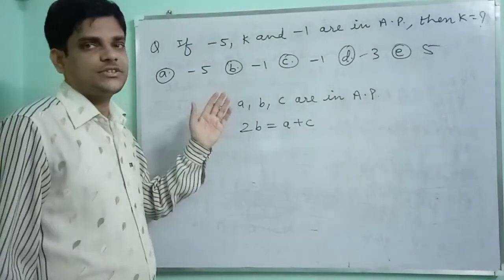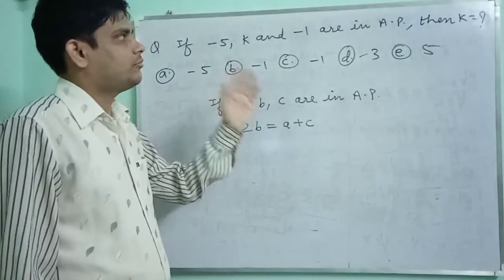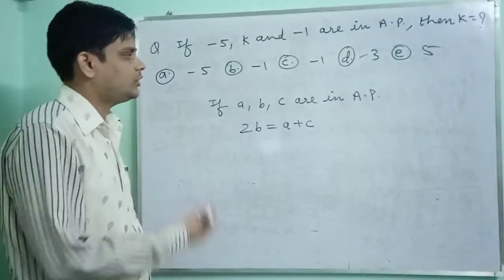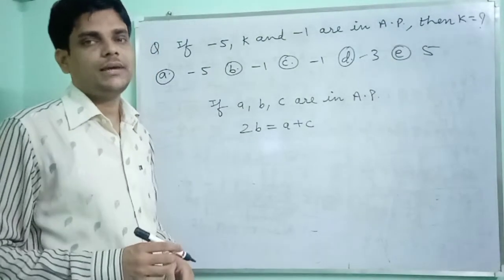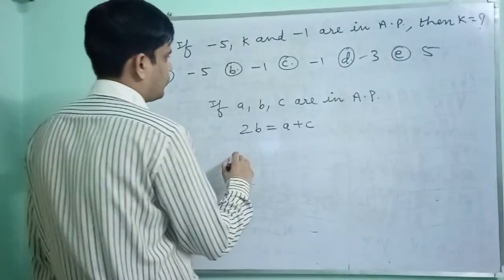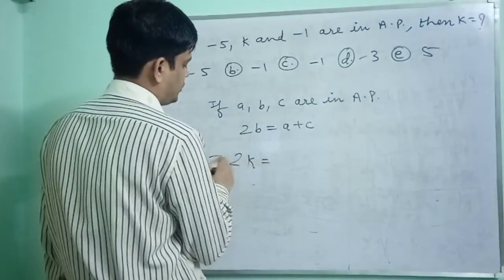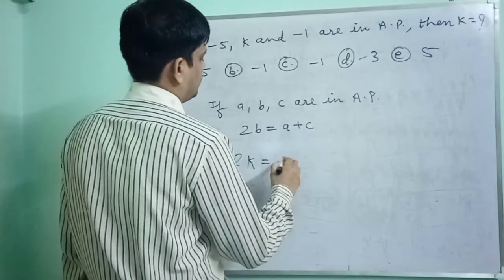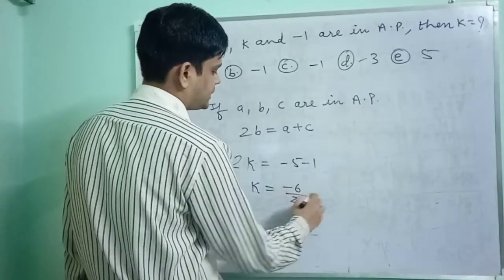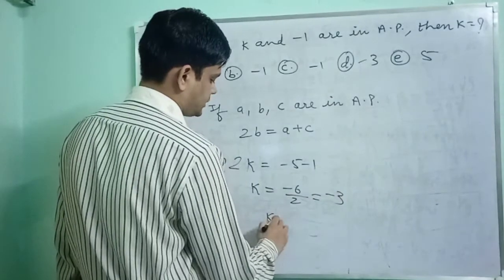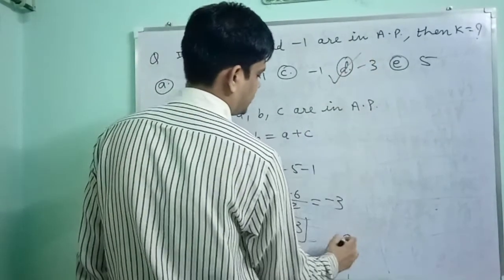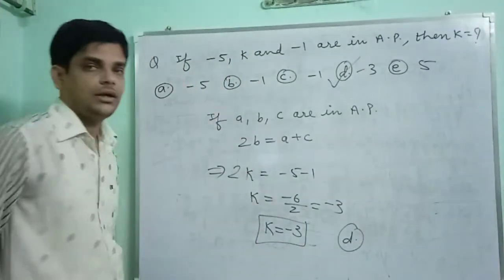If minus 5, K and minus 1 are in AP, then what is the value of K? We know that if A, B, C are in AP, then 2B equals A plus C. So 2K equals minus 5 plus minus 1, giving 2K equals minus 6, so K equals minus 3. Option number D is correct.